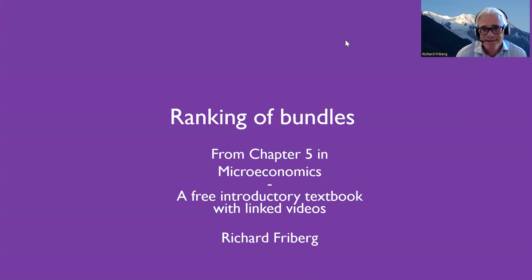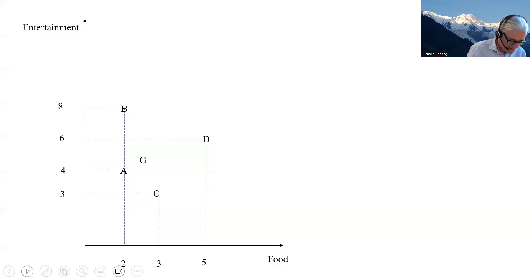Okay, I'm Rickard Freiberg, and now we're going to be looking at a figure from chapter five in my microeconomics textbook, where we're going to be looking at ranking of bundles by a consumer. Okay, see if we get there. There we go. Okay, so we have different bundles as given by a table that we illustrate here.